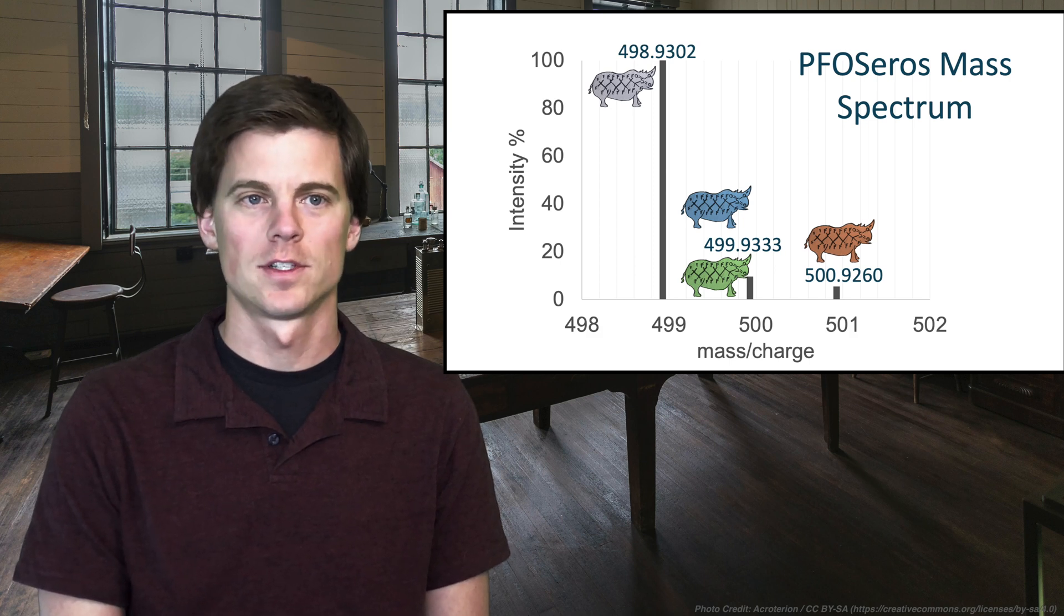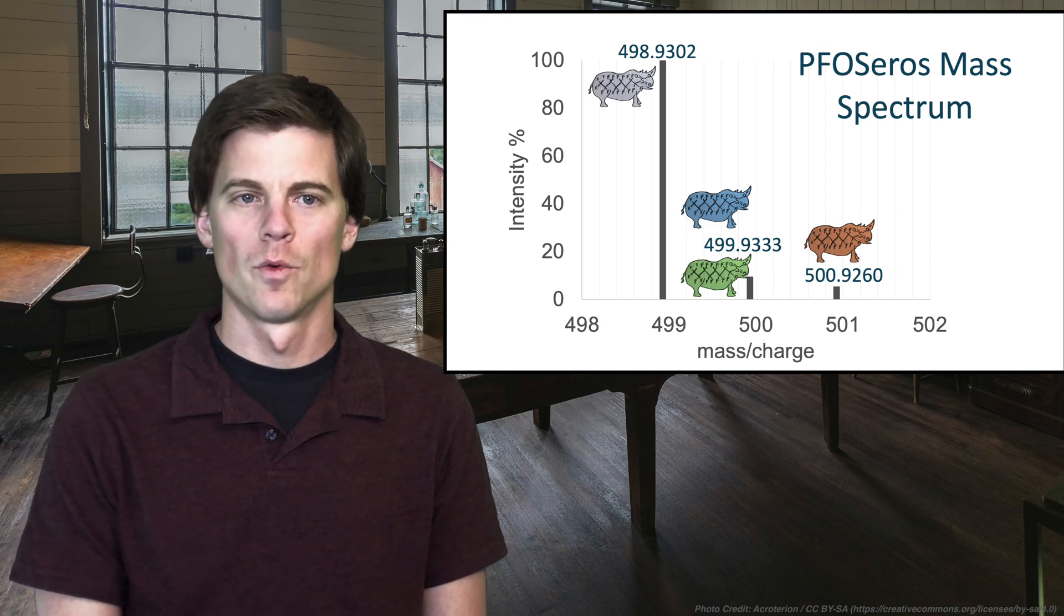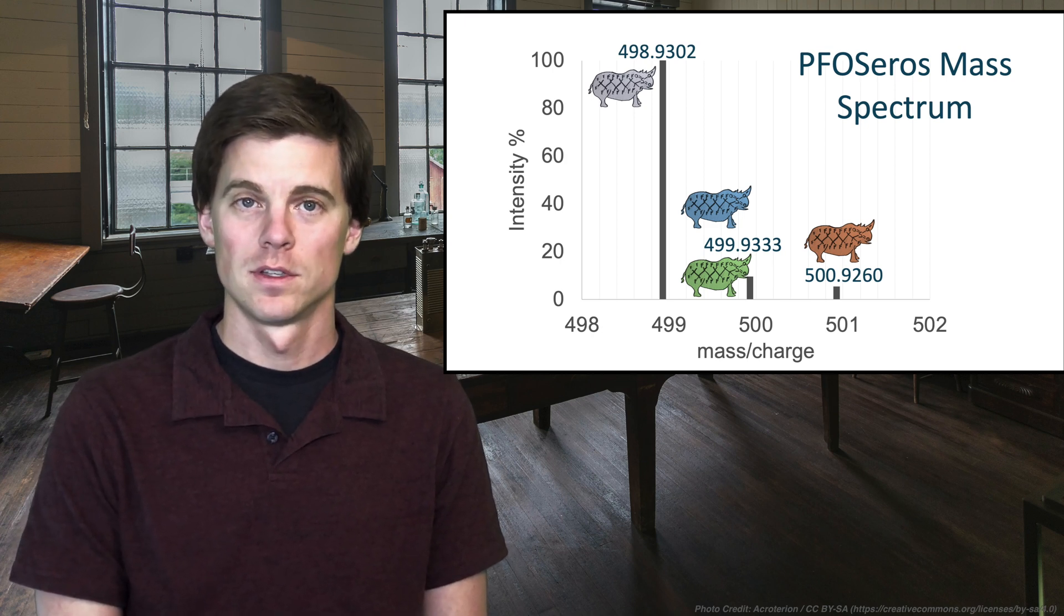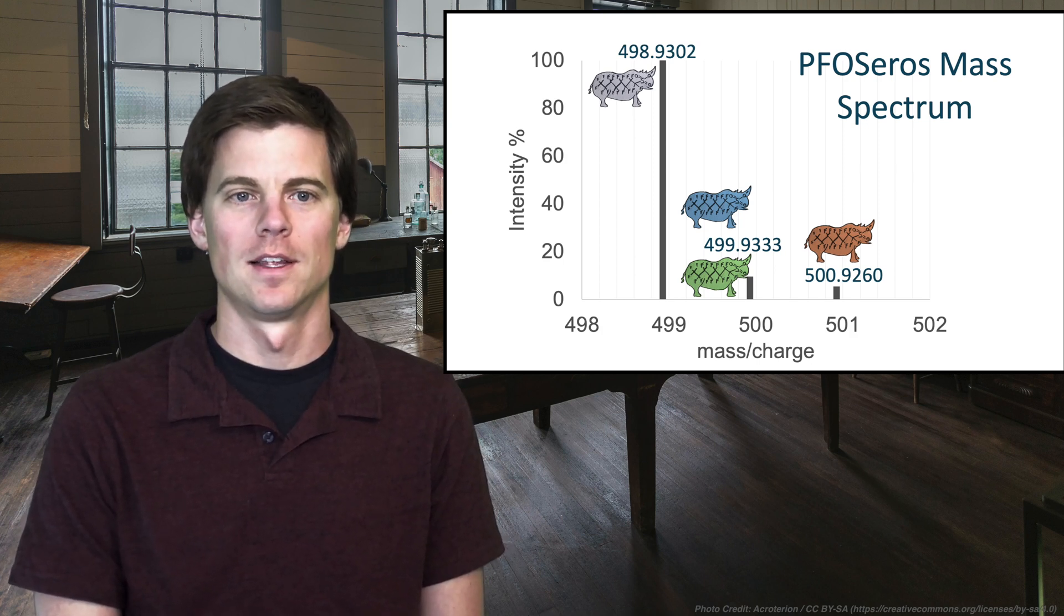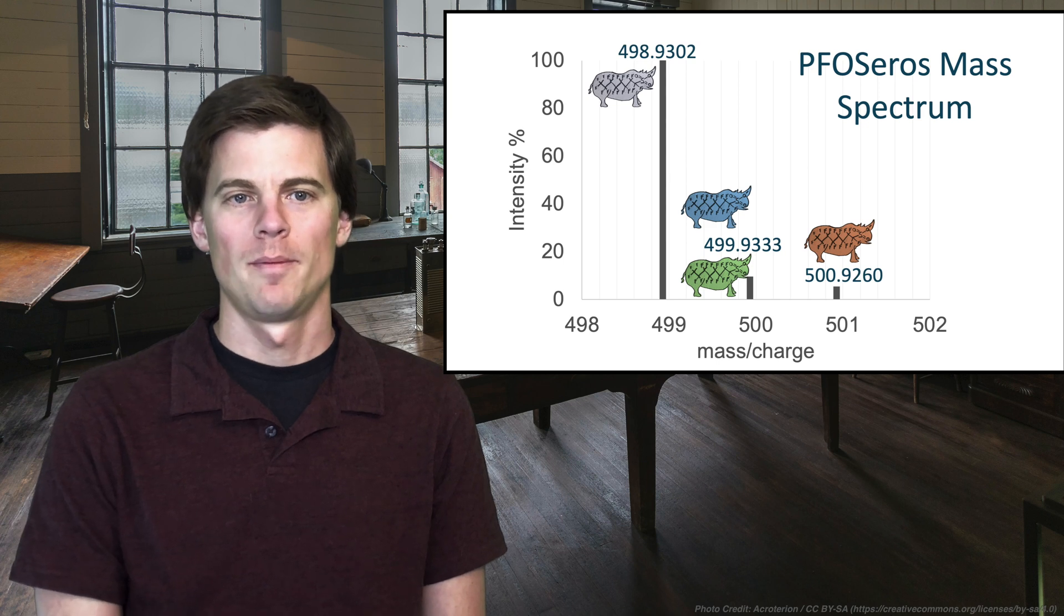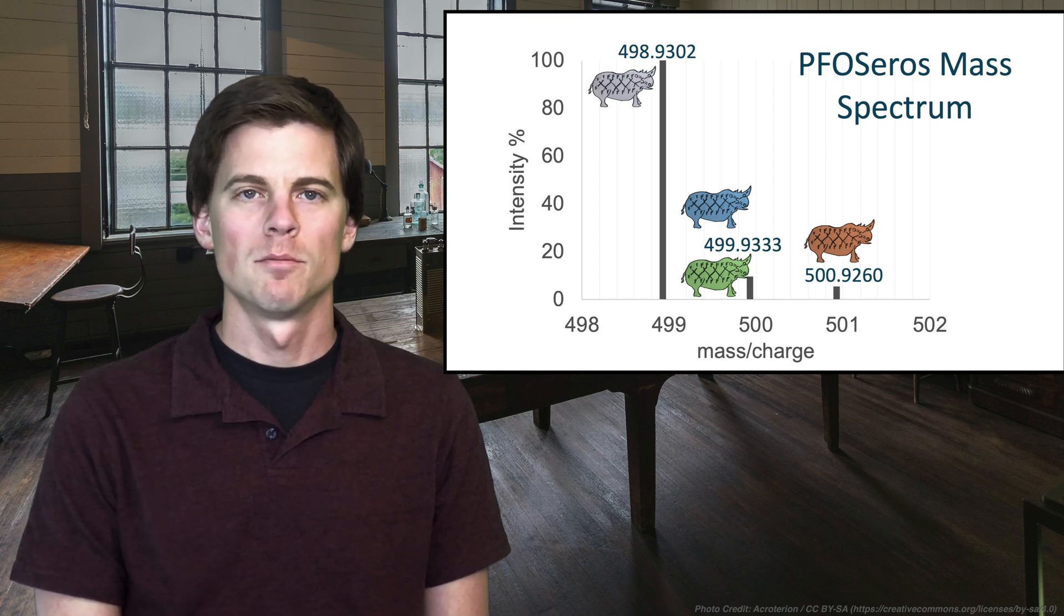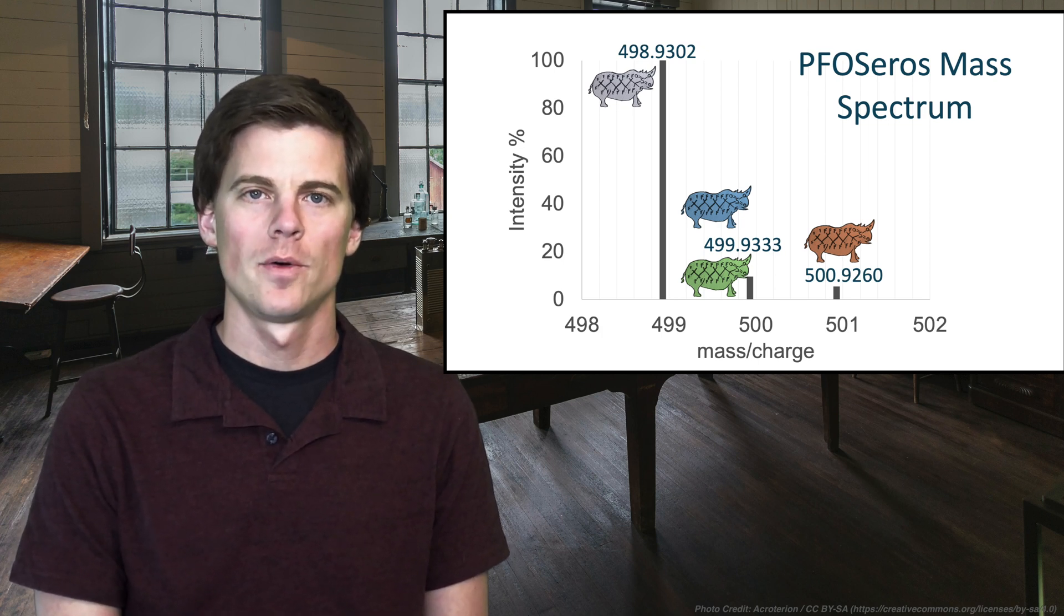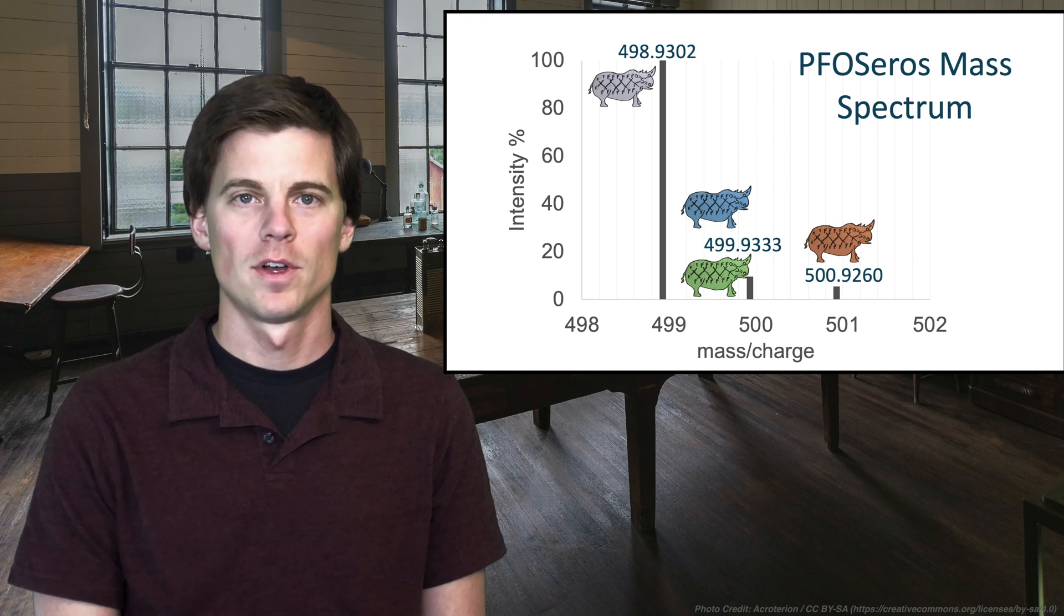So you would ignore that part, but the little bars show the relative intensity of each isotope. So you can see the major isotope there is our mono isotope, our gray PFOS at 498.9302 and really close together around 499.933. So you see our blue and our green PFOS, and then at the plus two mass 500.9260, that's our burnt orange guy. So this is important because knowing how these different peaks are derived shows you our PFOS fingerprint here. This is how PFOS looks and this is how you identify PFOS.